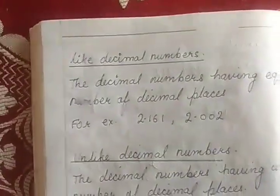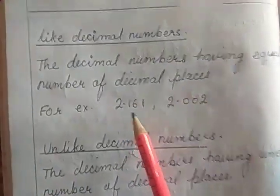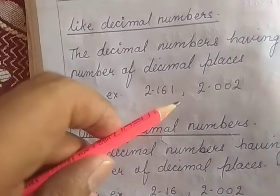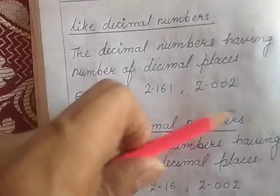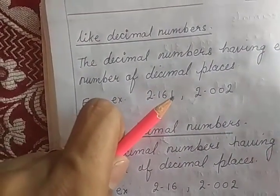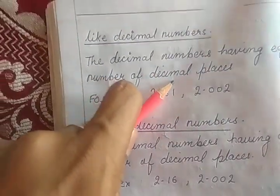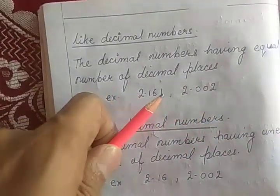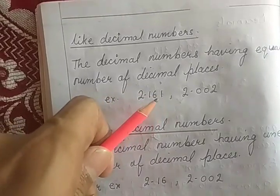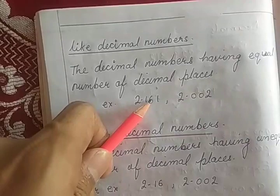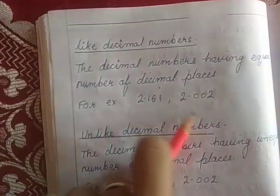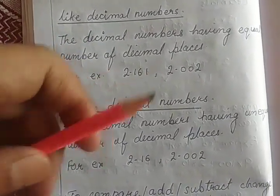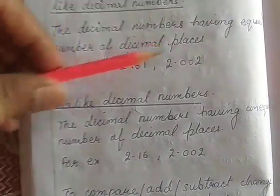Like decimal numbers have an equal number of decimal places. During comparison, addition, subtraction, or comparison, you have to make unlike decimal numbers into like decimal numbers.